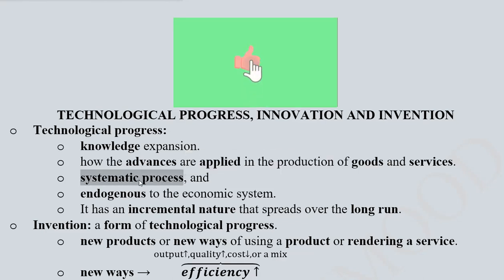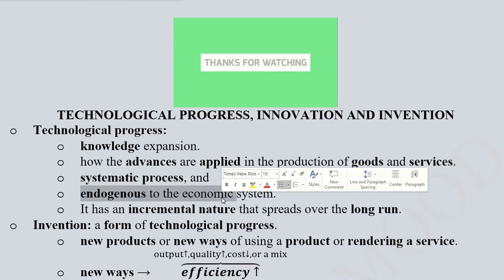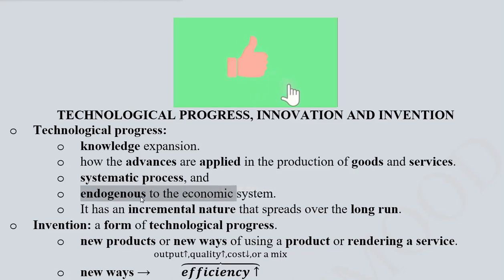It is a systematic process, yes, because knowledge creation and its implementation cannot be a random process. Moreover, it is endogenous to the economic system, because any economic system, if it is vibrant enough, is going to give rise to new knowledge and hence technological progress. So endogenously this process should continue in every economic system.